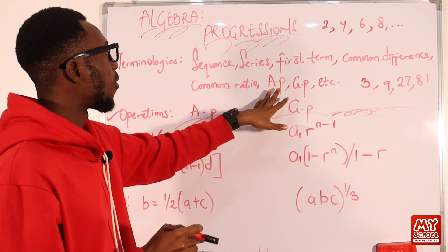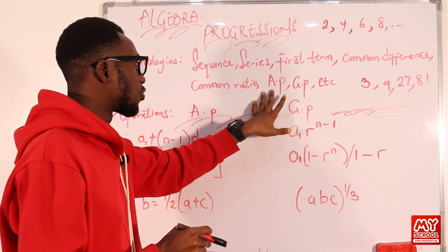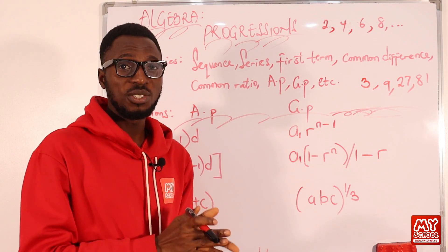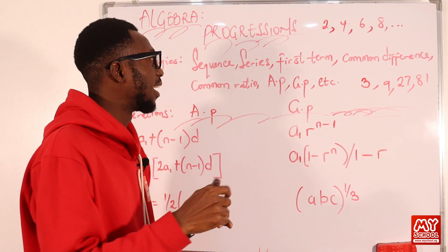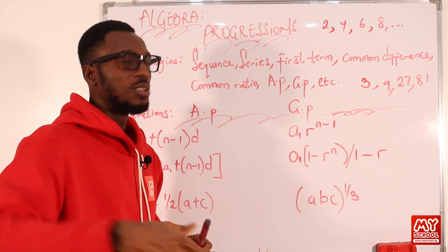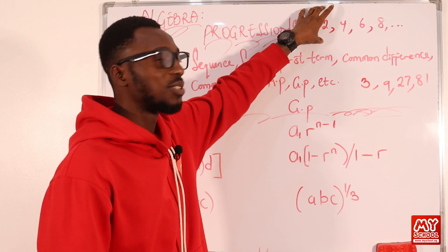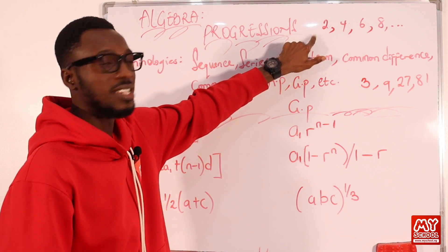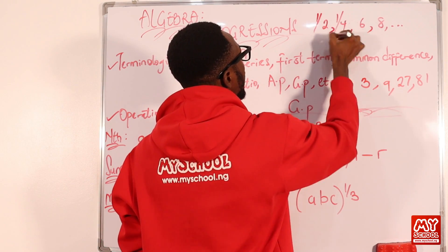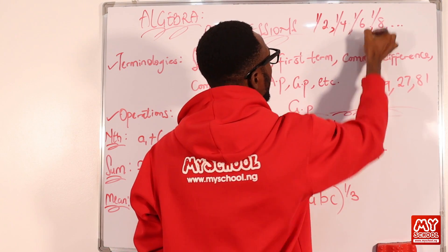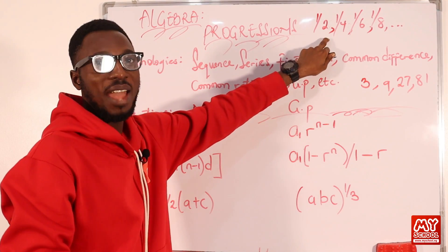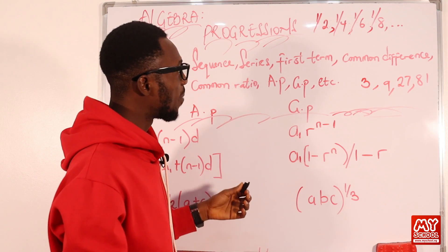We have other progressions as well, like the harmonic progression. The harmonic progression is just the reciprocal of the terms in an AP. So if I have the AP 2, 4, 6, 8, then to build the harmonic version I would say 1 over 2, 1 over 4, 1 over 6, 1 over 8. It's just the reciprocal of the terms in an AP.